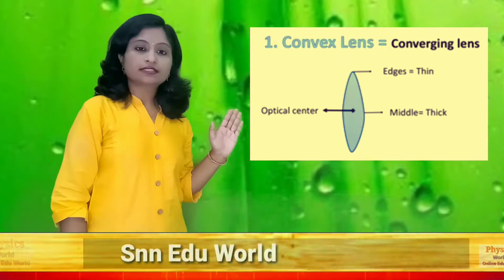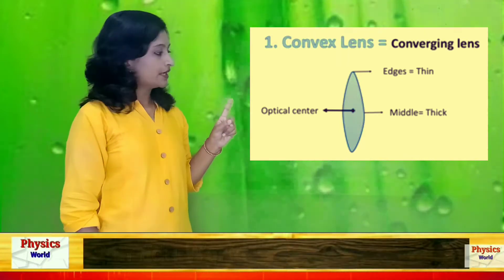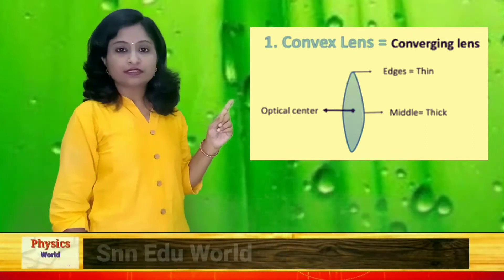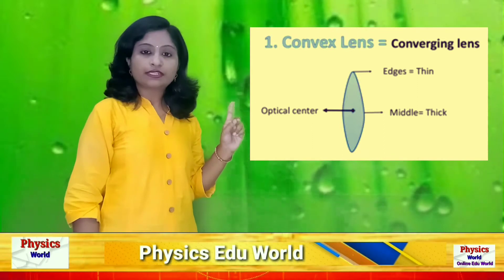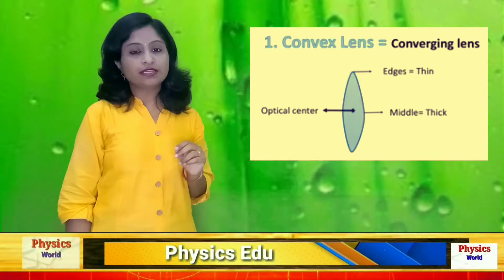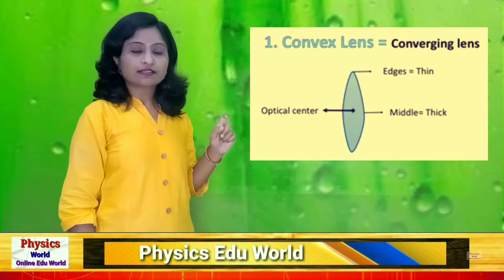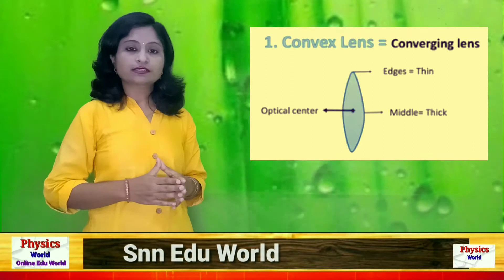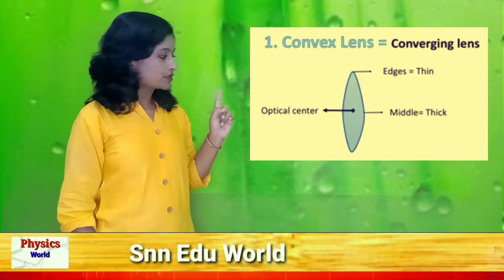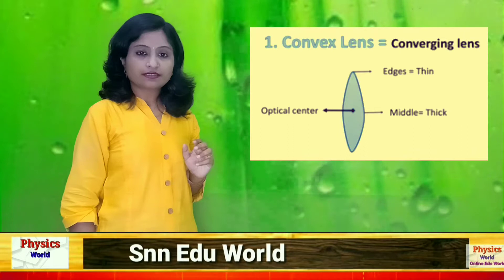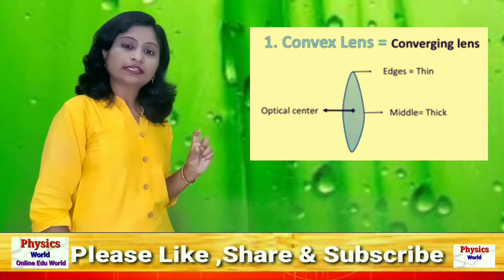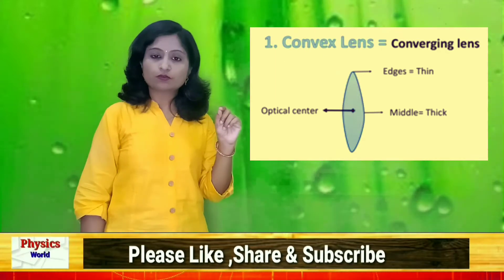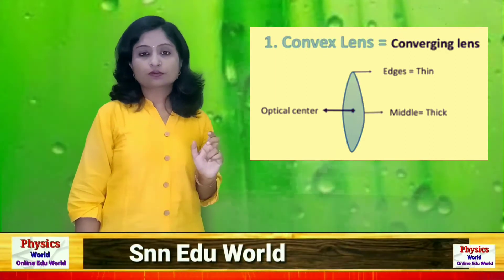Let's see how the convex lens structure looks, as shown in the diagram. It has an optical center at the center of the lens. Two convex surfaces, when they meet together, form a convex lens. The center is the optical center.